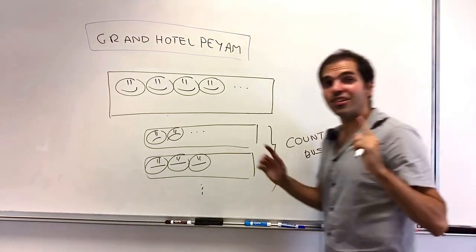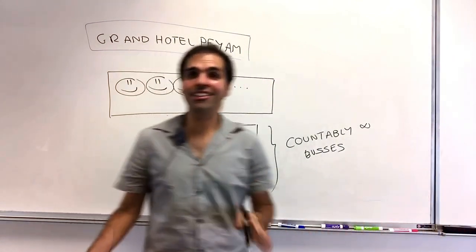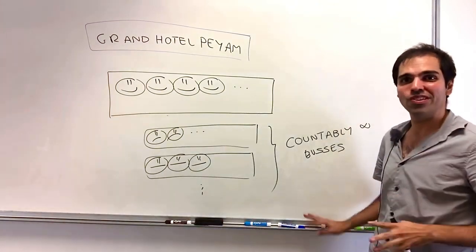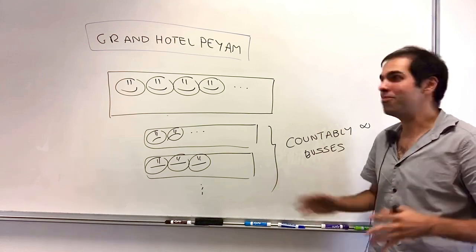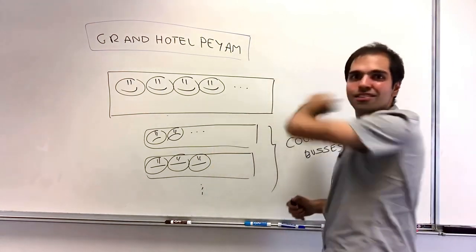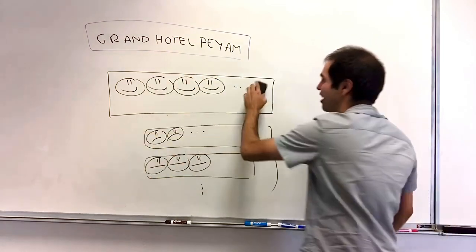The cool thing is, you can still accommodate them, and this might be a technique you haven't seen before, but it turns out the solution to this is prime numbers. Because what do you do? First of all, just to clean all the rooms, kick everyone out.